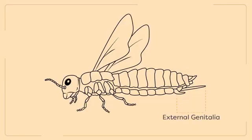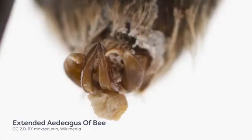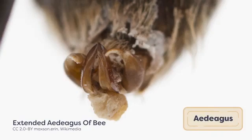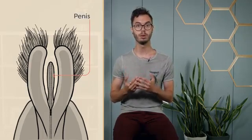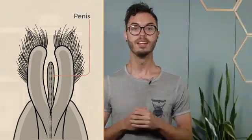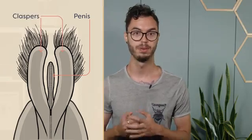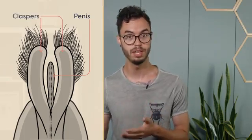External genitalia used in mating are often found towards the posterior end of the abdomen. The genitalia of male and female insects have enormous structural variation, and each example is often unique to a particular species. The male sexual organ is called the aedeagus, and is usually protected inside the body until mating begins. A major part of the aedeagus is the penis, a tube-like organ which delivers sperm. The aedeagus may also include small claspers, which allow the male to hold onto the female during copulation.